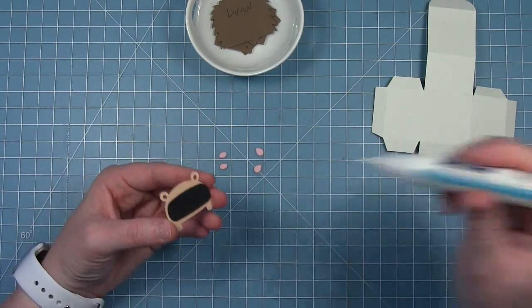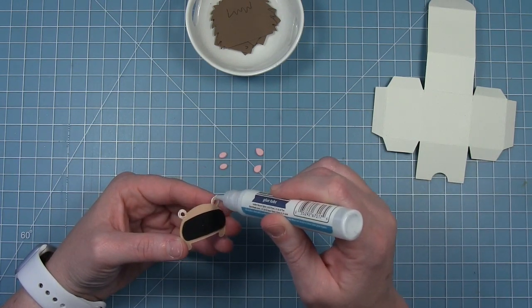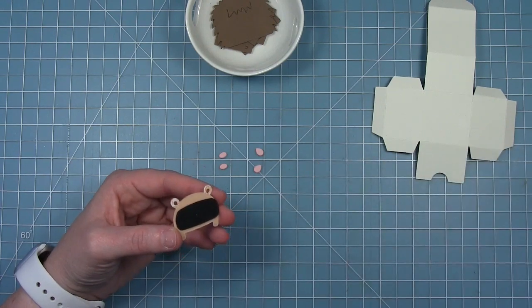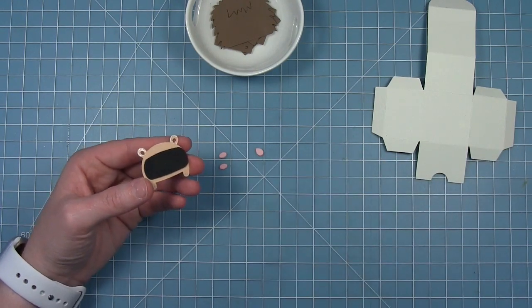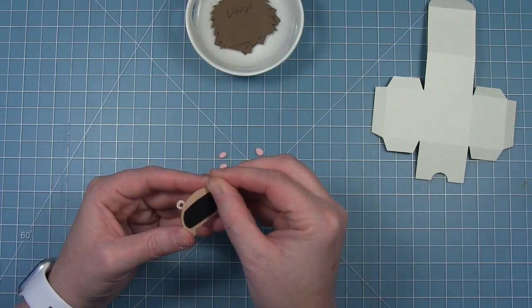Then I'm going to add a little bit of liquid glue to the back of his ears, and those light pink pieces that I've cut that are teardrop shaped are going to layer right behind the ears to fill in that opening in the ears.